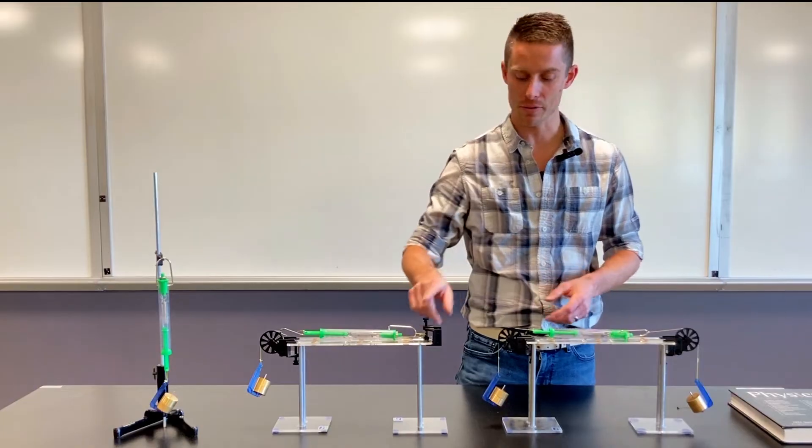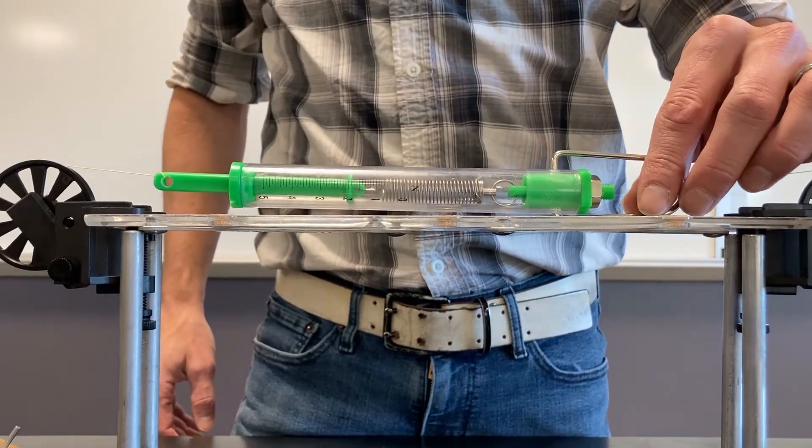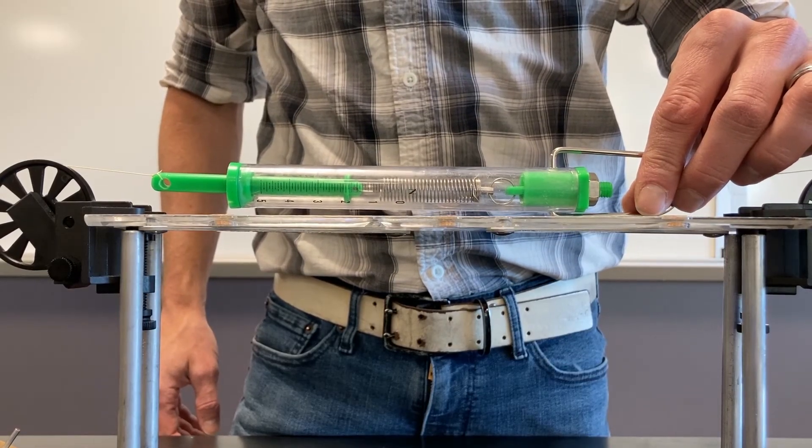I don't care what it is that's pulling this spring scale that way, whether it's a bracket or another hanging weight. There's only two newtons of force in the spring scale, which means it only reads two newtons.